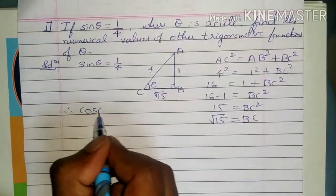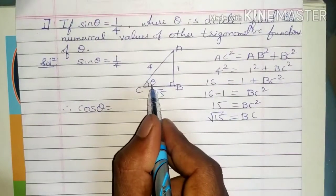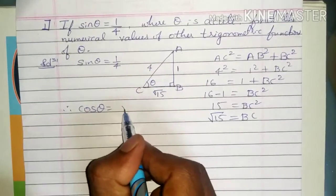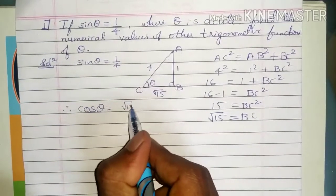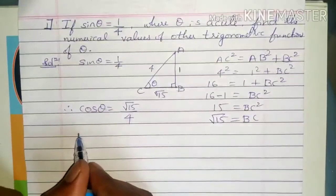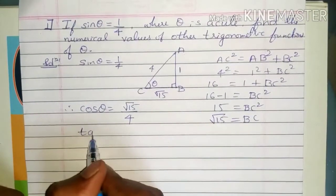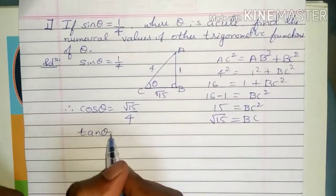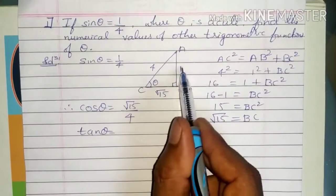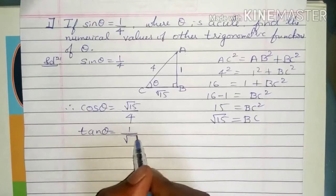Therefore, cos theta equals adjacent by hypotenuse, which is root 15 by 4. In the same way, tan theta equals opposite by adjacent, which is 1 by root 15.